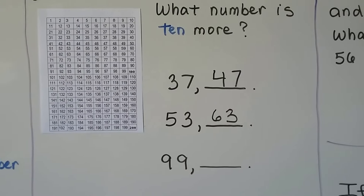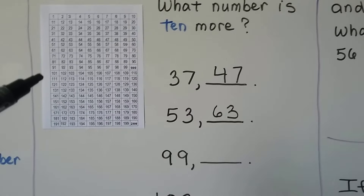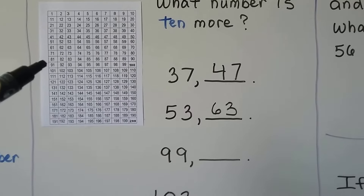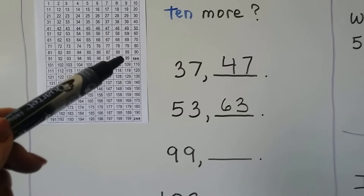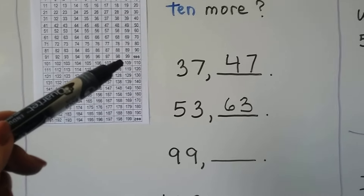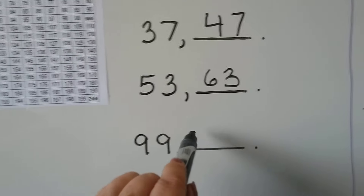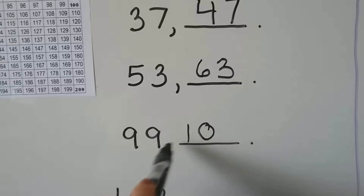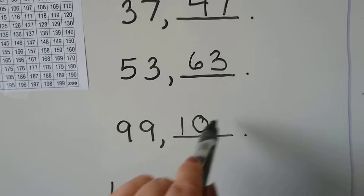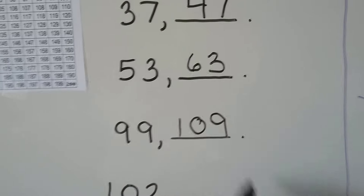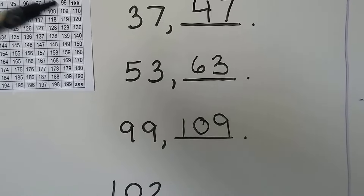99 — what is 10 more than 99? We find 99 on the chart — here's the 90s. There's 99, and 10 more would be 109. The 9 went up to a 10 in the tens place, and this 9 in the ones place stays the same. It's 109. We go from 99 to 109.